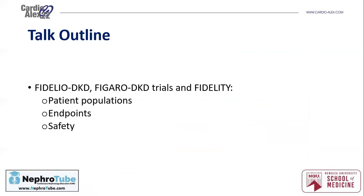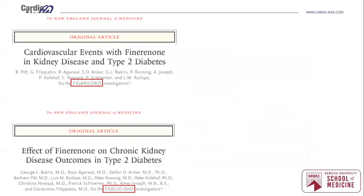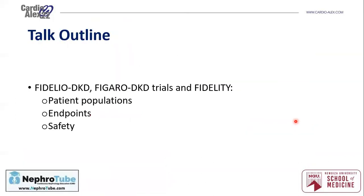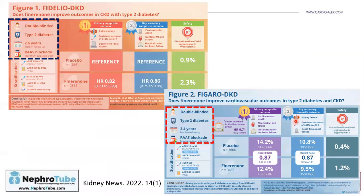That's why we now have two mega trials: Fidelio DKD and Figaro DKD. The Fidelity analysis is a pooled analysis of both trials. In the Figaro DKD trial they tested cardiovascular events with finerenone in kidney disease and type 2 diabetes, while in the Fidelio DKD trial they tested the effect of finerenone on chronic kidney disease outcomes in type 2 diabetes. The Fidelity pooled analysis combined data from both trials into one report.